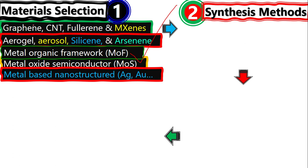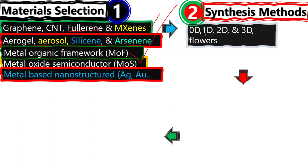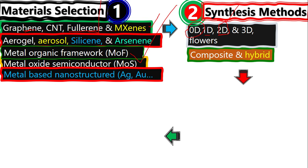Suppose you select carbon-based material. Now, what type of shape do you want? You take some carbon-based precursor, but you want to make CNTs or graphene. You have to use different methods for that. CNT is one-dimensional, graphene is two-dimensional, and fullerene is zero-dimensional. When you are looking for fullerene, you use different methods. For a 2D material like graphene or graphene oxide, you use different methods. If you want to make a composite or hybrid structure, you have to use yet another method to get that composite hybrid structure of the carbon-based material.